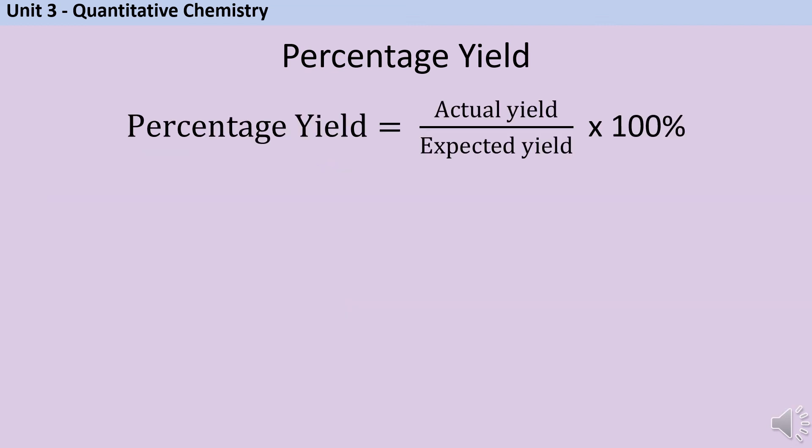So the formula to work out percentage yield is actually pretty similar to atom economy. We're doing actual yield divided by expected yield times by 100%. So just like with atom economy it's always going to be a small number on top of a big number times 100%. Now when it comes to exam questions, basically percentage yield questions are either incredibly easy or really quite tricky. There's not really any middle ground. I'll show you what I mean.